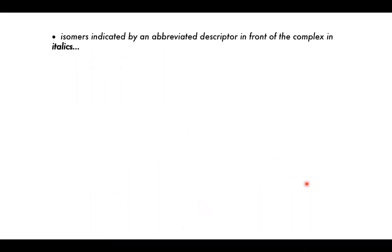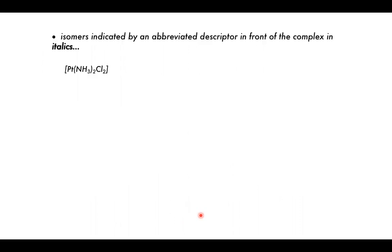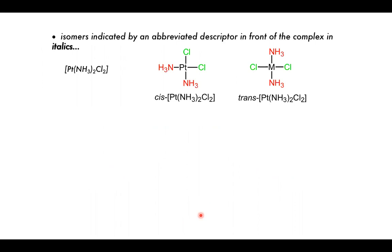Isomers are indicated by an abbreviated descriptor in front of the complex in italics. Whenever we write these things down, there are different ways to arrange the ligands. In a complex where the ligands are all the same, arrangement doesn't matter. But in a complex like this one, we can have arrangements where the two of the same ligand are beside each other or opposite each other — so we can have cis and trans isomerism. That is indicated in the name. When they're beside each other we have the cis complex, and when they're opposite each other we have the trans complex.